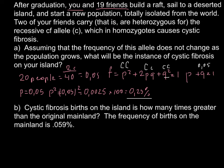Now we can solve the second question: cystic fibrosis births on the island is how many times greater than the original mainland? The frequency of births on the mainland is 0.059%. In order to find how much greater the occurrence of the homozygous recessive condition is, we have to divide the greater by the smallest. So we divide 0.25 by 0.059, and the answer is 4.24. So occurrence of this disease on the island would be 4.24 times greater than on the mainland population.